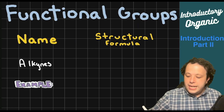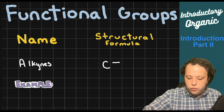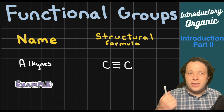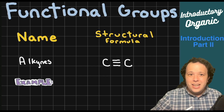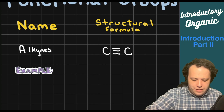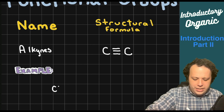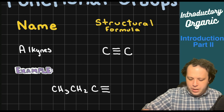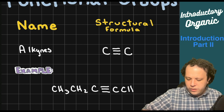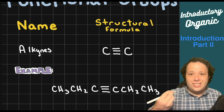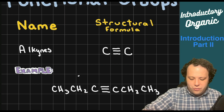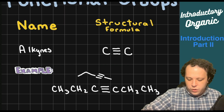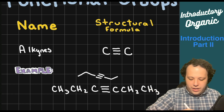Our next group is alkynes, which have a triple-bonded structure. We're looking for that C≡C triple bond. For example, if I have a long chain like CH₃–CH₂ and then a carbon with a triple bond in the middle, this represents an alkyne. You could also represent that as a geometric line structure showing the same structure.